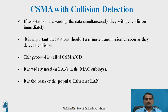Now, CSMA with Collision Detection. If two stations are sending data simultaneously, they will get a collision immediately. If two stations simultaneously transmit data to the next station without sensing, then after passing the data, the collision may be detected. After collision, the data has to be discarded and the user must resend the data. It is important that stations should terminate a transmission as soon as they detect a collision. This protocol is called CSMA — Carrier Sense Multiple Access with Collision Detection.